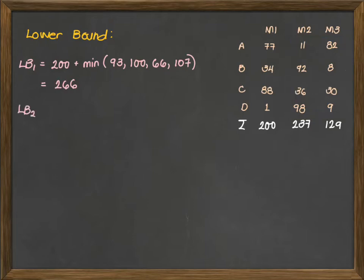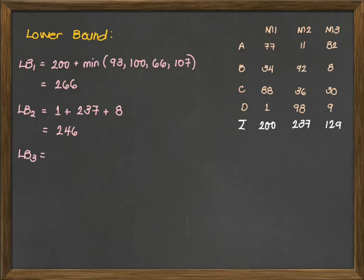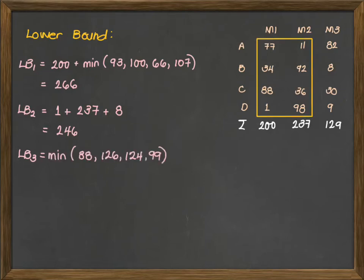For the second lower bound value, we get the minimum value among the first columns, which is 1, plus the sum of all processing time in machine 2, plus the minimum value on the third machine, which is 8. So the value is 246. For the third lower bound value, we get the minimum sum between machines 1 and 2, that's 88, 126, 124, and 99, plus the sum of machine 3, which is 129. So the lower bound for the third machine is 217. Getting the maximum value between the three values, the lower bound value is 266. This is the L value from the percentage error formula we have earlier.